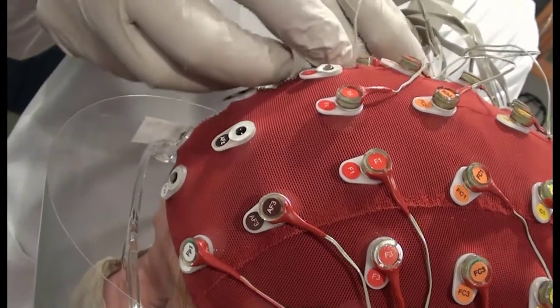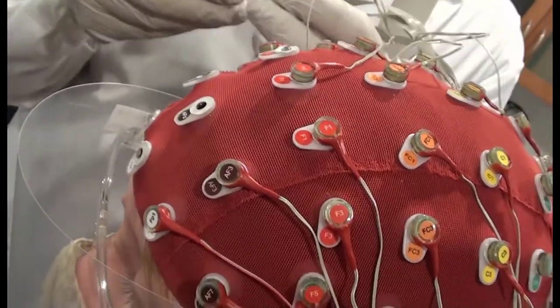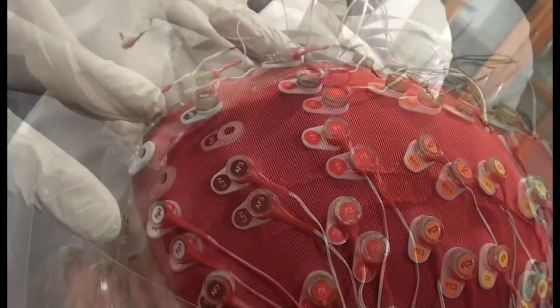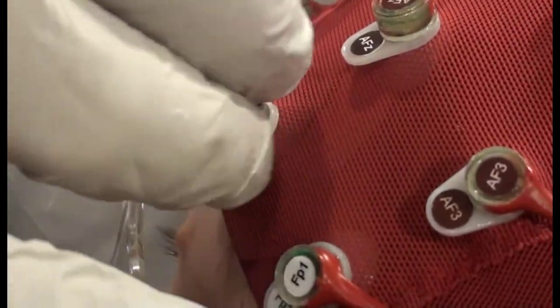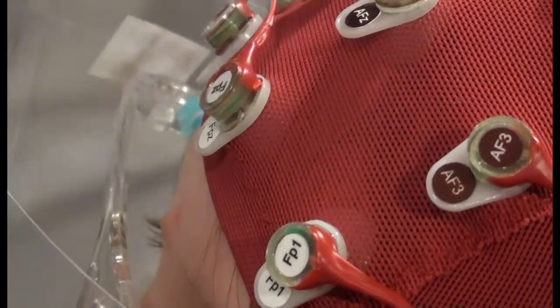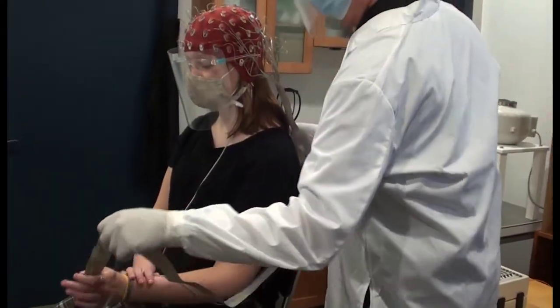As you finish with each electrode cable, put the cable over the participant's left shoulder so that all the cables are in one place when you're finished. Depending on your participant population, you might also want to make the participant aware that they are responsible for keeping the cables off the floor so that you don't step on them.